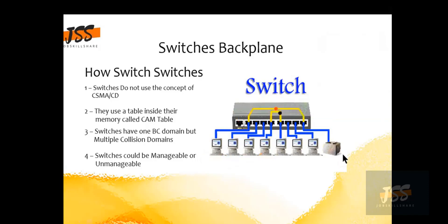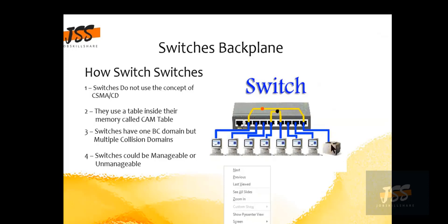As shown in the animation, if this computer wants to communicate with the printer, it has a separate path to follow, so it will not collide with any other computers. In other terms, you can manage specific ports — that's the switch capability. You can go into a specific port and say you want a specific printer connected to that specific port. That is what makes a switch more powerful than a hub.